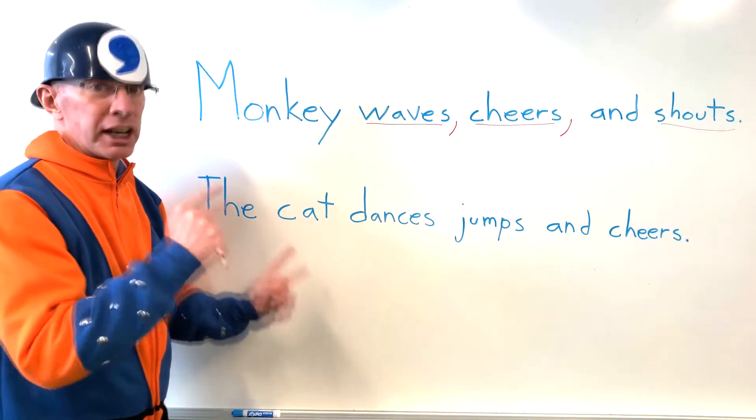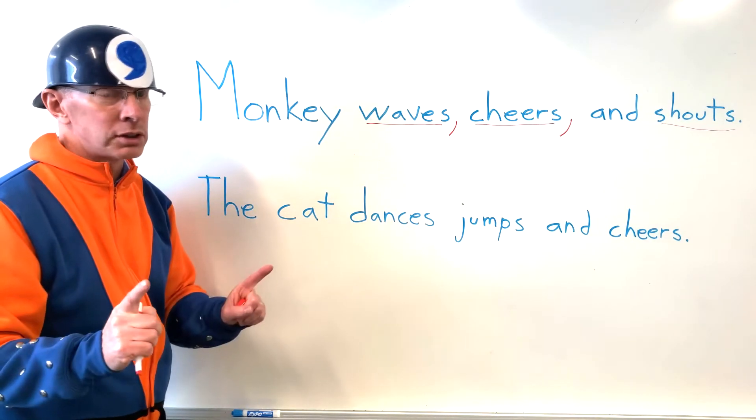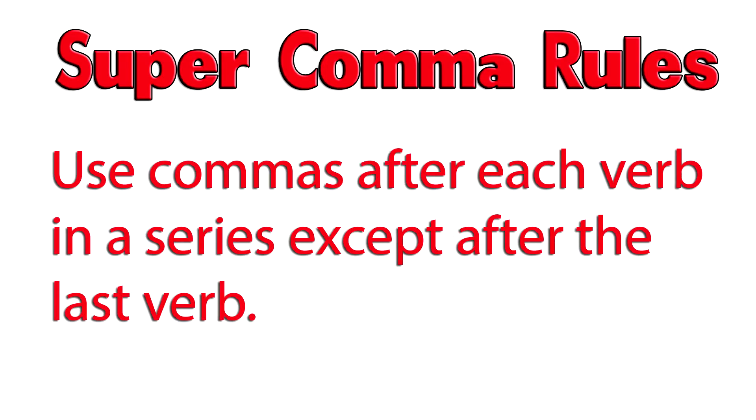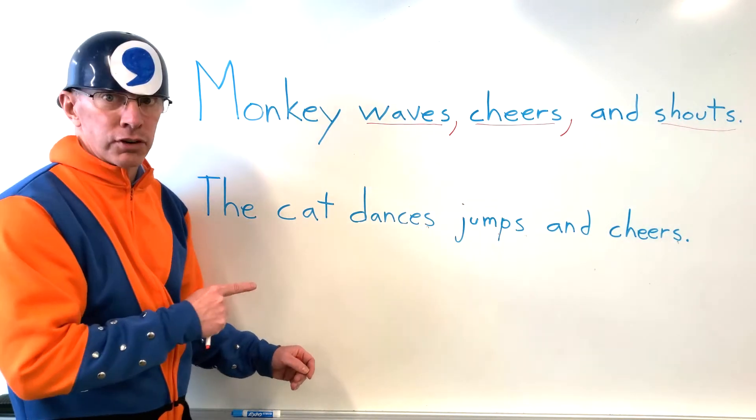Alright, let's take a look at the next sentence. Remember, we've got rules. Remember, ask yourself the rule. Are there three or more verbs? And then you're going to put a comma after each verb except for the last one. Alright, let's take a look. Let's find the verbs in the sentence.